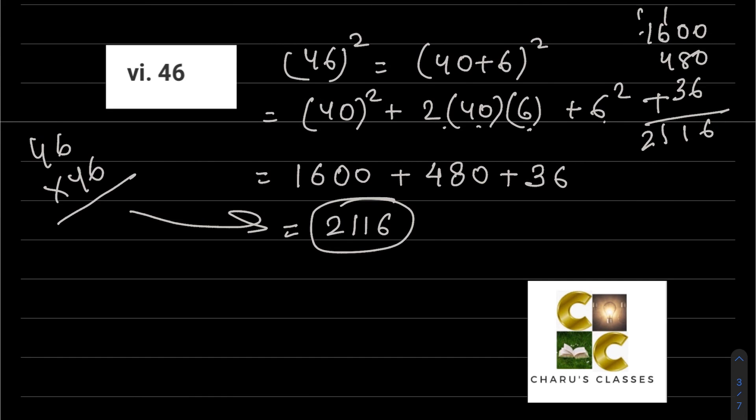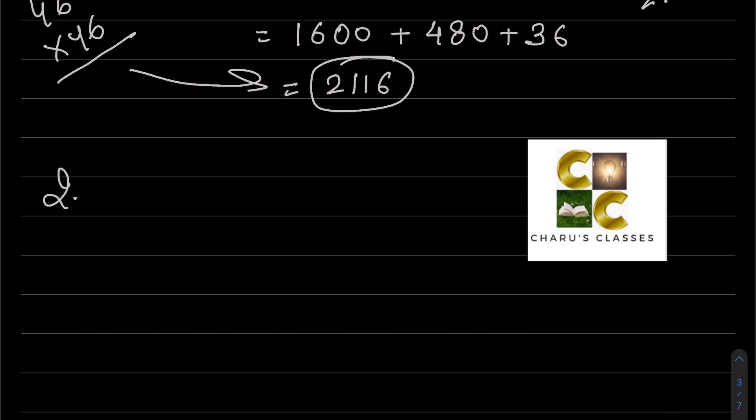Question number two: Write a Pythagorean triplet whose one member is 6. Here we have to find a Pythagorean triplet. First, let's understand what a Pythagorean triplet is.